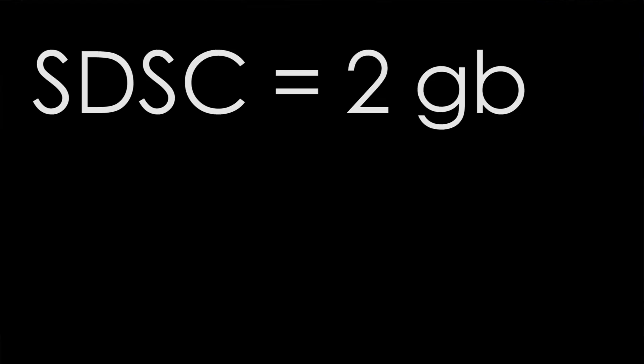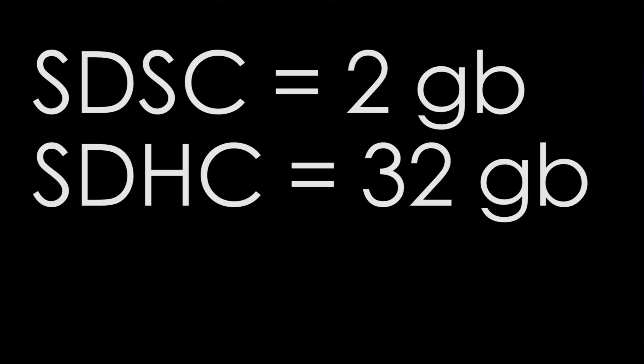SD cards have been iterated like the following. First, there is SDSC, Standard Capacity. After that, there was SDHC, High Capacity, which, introduced in 2006, had a maximum file transfer rate of 25 MB per second and a max capacity of 32 GB.